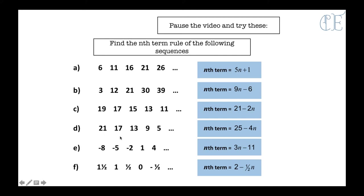With this one you are subtracting 4 every time, so it would start with minus 4n. Then you need to add 25 to get 21, so yours might look like minus 4n + 25, which is the same as 25 minus 4n. On this one they are adding 3 every time: minus 8 add 3 is minus 5, add 3 is minus 2, add 3 is 1, add 3 is 4. So it starts with 3n, and to get from 3 to minus 8 we need to take away 11. And finally, they are taking away a half every time, so it must be minus a half n. To get from minus a half to 1 and a half we need to add 2, so yours might look like minus half n plus 2.